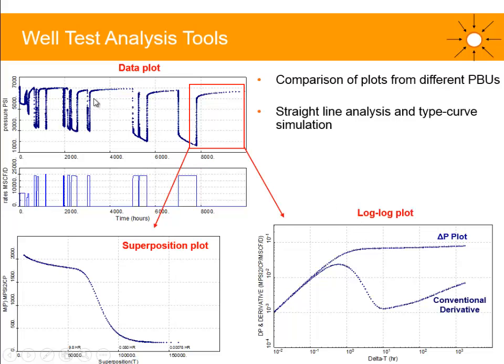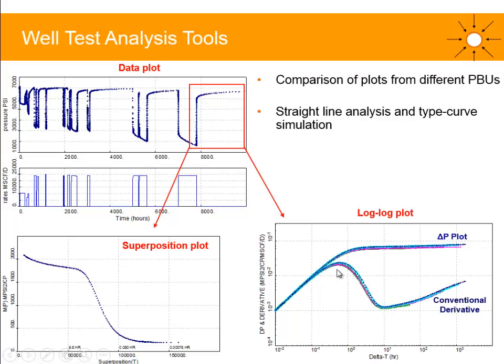We could plot the different PBUs on the same derivative plot, and that's going to give you what we call the derivative overlay. We do that to try to get some confidence in the data. It's also easier to spot the different flow regimes and to spot any dynamic changes as well.